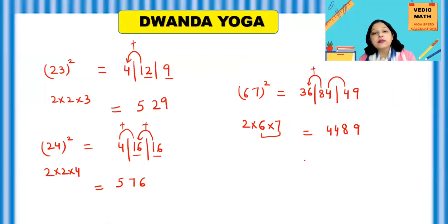So answer of 67 square is 4, 4, 8, 9. So with the help of this Dwanda Yoga, we can find the answers very quickly. Let's take the last square.